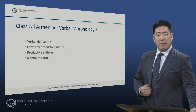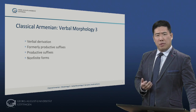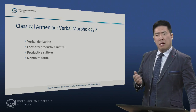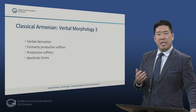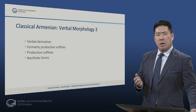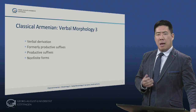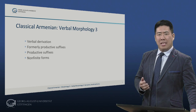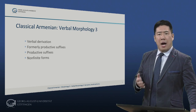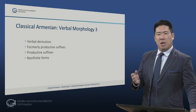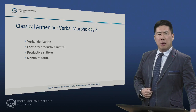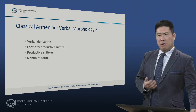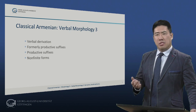Here's the roadmap for this video. We will talk about verbal derivation and then look at formerly productive suffixes — those which were productive in the prehistory of classical Armenian but apparently no longer by the time of our surviving texts — and productive suffixes, those which remained completely productive at the time of the composition of classical Armenian texts. We will then finally look at non-finite forms, such as the infinitive and various verbal adjectives and nouns.